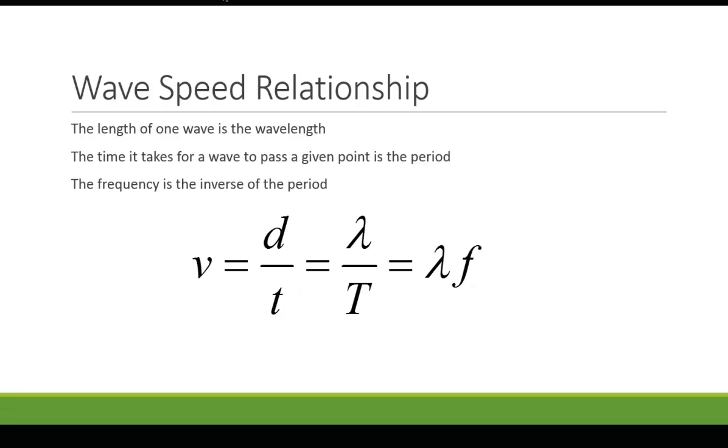So if we first look at this equation that we've been using all semester long, v equals d over t, kind of like what we did with circular motion, the distance of one wave is this wavelength. This is the Greek letter lambda, that is the wavelength, and we know the time it takes that wave to pass a given point is the period.